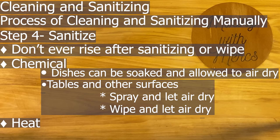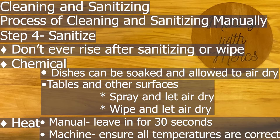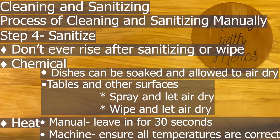Heat sanitizing is not used as much anymore. For manual hand washing, you have a sink heated to 180°F and must leave items in it for 30 seconds or longer. For a machine, ensure all temperatures are correct — 171°F for manual and 180°F for machine washing. This method is used less partially because of the injury risk of accidentally putting your hands into extremely hot water.